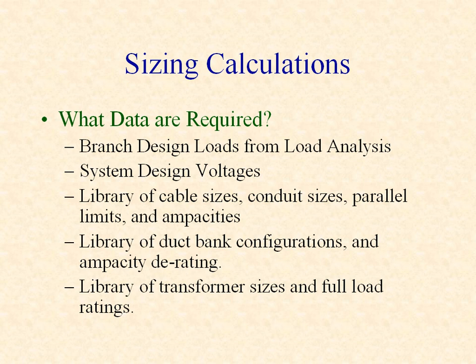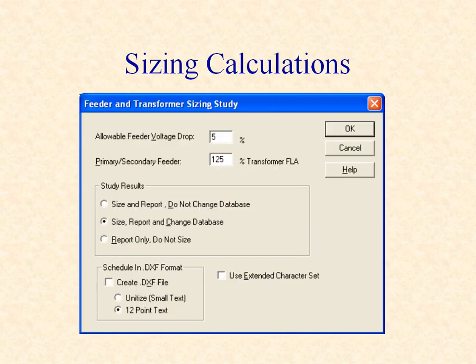Duck bank configurations and ambient temperature are used to further derate the cable size selection. A calculation is made to verify that the branch voltage drop is also within acceptable limits. Transformer sizes are selected by comparing the calculated design load with the full load transformer rating available in the library. The study options for the DAPR sizing calculations include a specification of the maximum allowable branch voltage drop and the ability to size feeders directly connected to a transformer relative to the transformer size rather than the design load. You have options to report the calculated size of the cables and transformers without actually updating the existing cable and transformer sizes in the project database, or you can report the size of existing equipment or resize the equipment and update the project database.